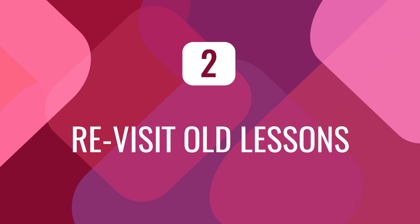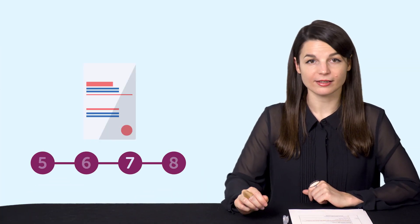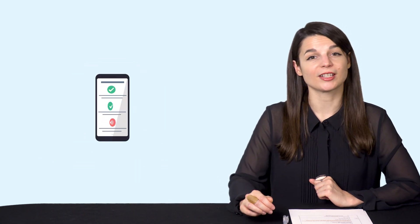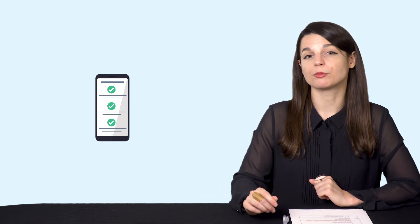Number two. Revisit old lessons. An easier way to self-assess your language level is to revisit old lessons. You can do this with any program you're learning with. If you've truly made progress, then you should be able to understand the lesson dialogues with no problem. If not, then you know that you need to review them some more.